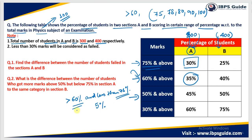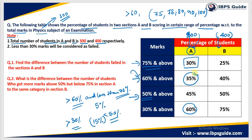If I ask what is the total number of students who scored more than 30% but less than 50%, then I know that more than 30% is 60%. And 50% and above is 45%. So I subtract these two and get 15%. So 15% of students in section A scored more than 30% but less than 50%. Whenever we have to find the number of students between any two ranges, we have to subtract the two percentages given. The percentages are cumulative — each higher range percentage is contained within the lower range percentage. So 45% includes the 30% and 35% percentages inside it.